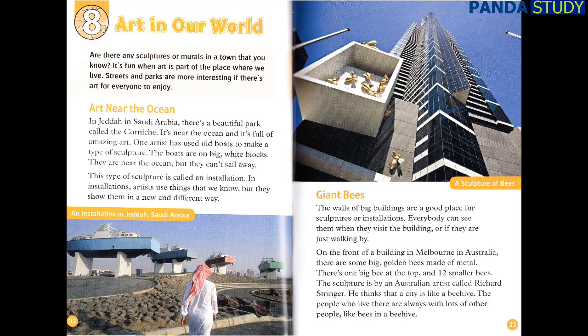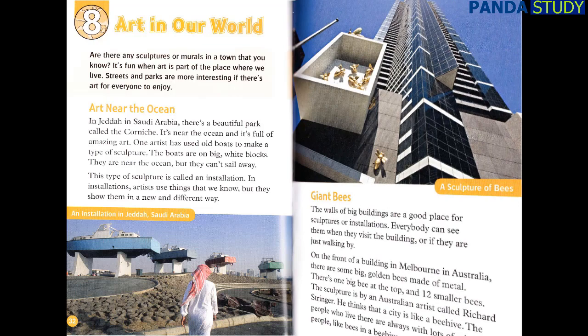The walls of big buildings are a good place for sculptures or installations — everybody can see them when they visit the building, or if they are just walking by. On the front of a building in Melbourne in Australia, there are some big golden bees made of metal — one big bee at the top and twelve smaller bees. The sculpture is by an Australian artist called Richard Stringer. He thinks that a city is like a beehive: the people who live there are always with lots of other people, like bees in a beehive.